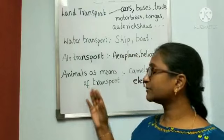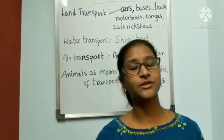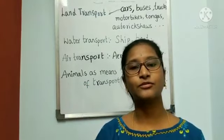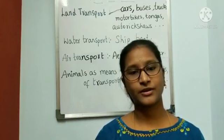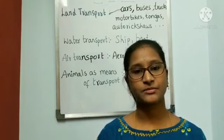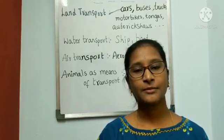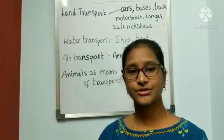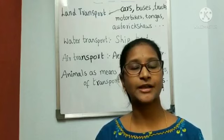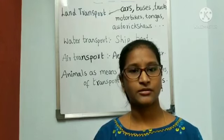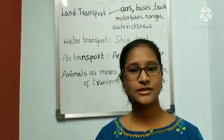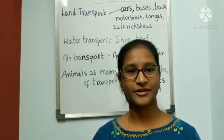Let us learn about animals as a means of transport. Some animals are used as means of transport. Examples like camels, elephants and mules. Camels are used in desert regions, mules are used in hilly regions, and elephants are used in forest regions. I hope you understood this lesson. Thank you and have a great day.